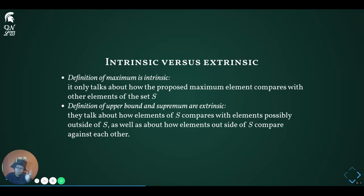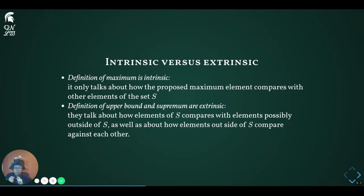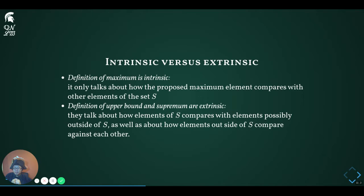The definitions of upper bounds and supremum are, on the other hand, extrinsic. The definition of an upper bound, being any real number that is at least as large as any element of S, is a statement about comparing numbers that are possibly outside of S against those in S. It is important to keep this distinction in mind when you think through today's lecture and do the associated exercises. With intrinsic statements you have more restricted scope, while with extrinsic statements you get a wider range of possibilities both to satisfy and to falsify a statement.